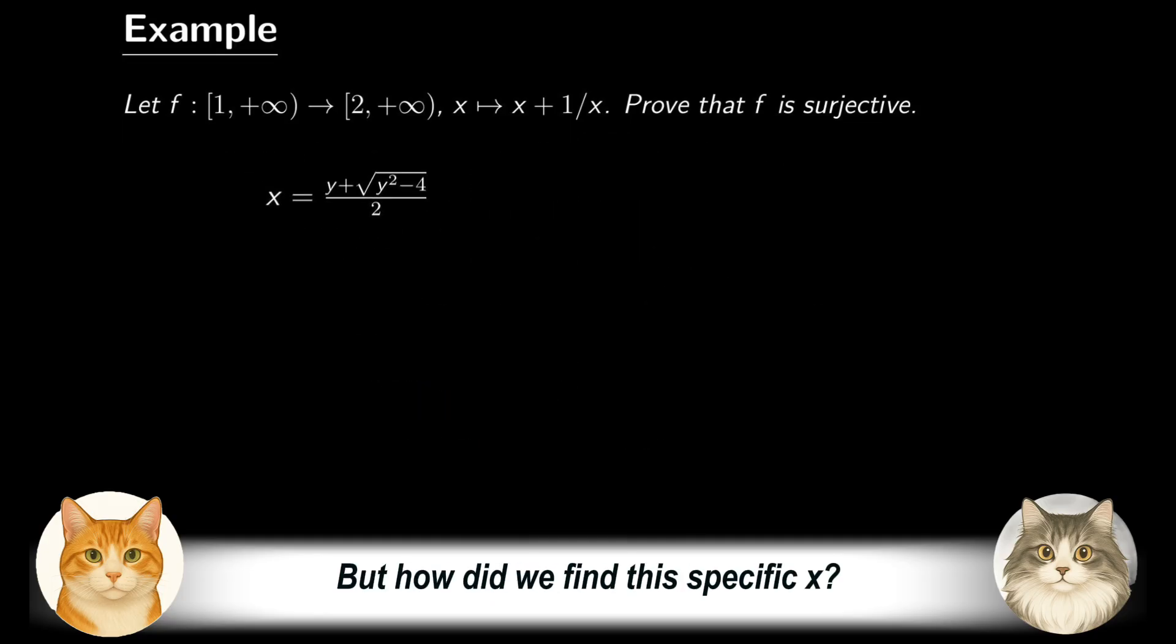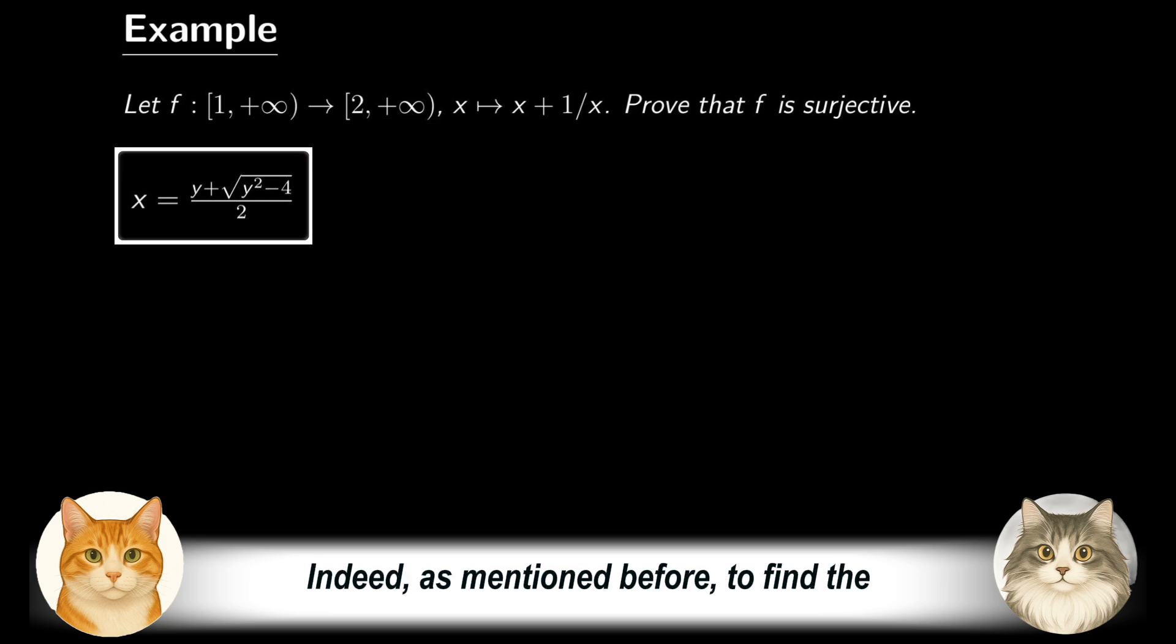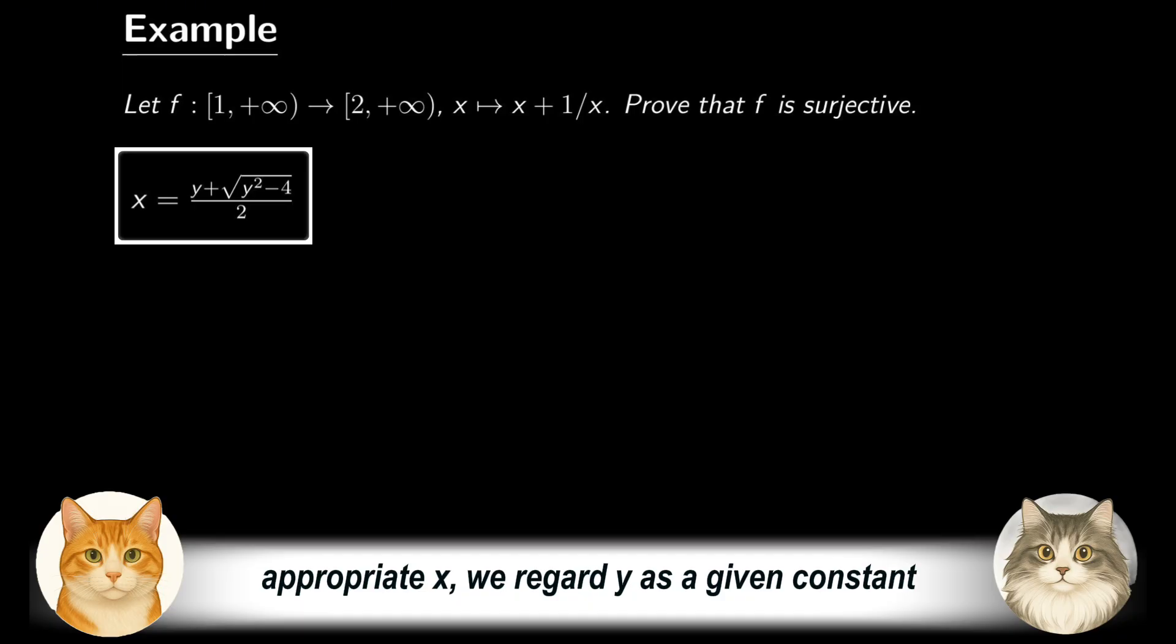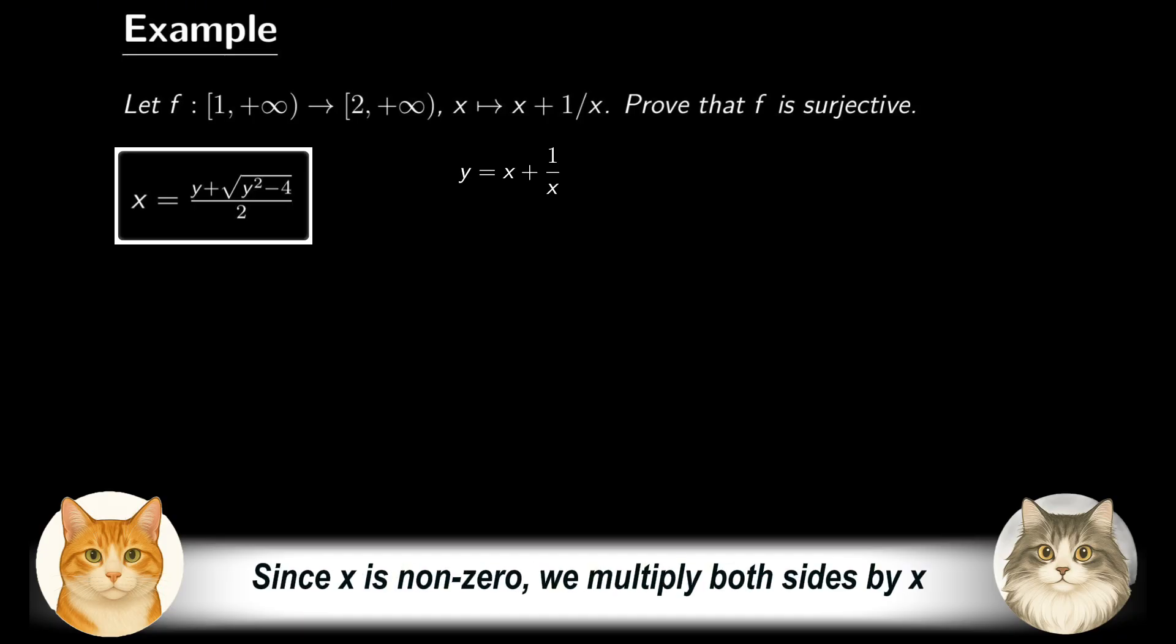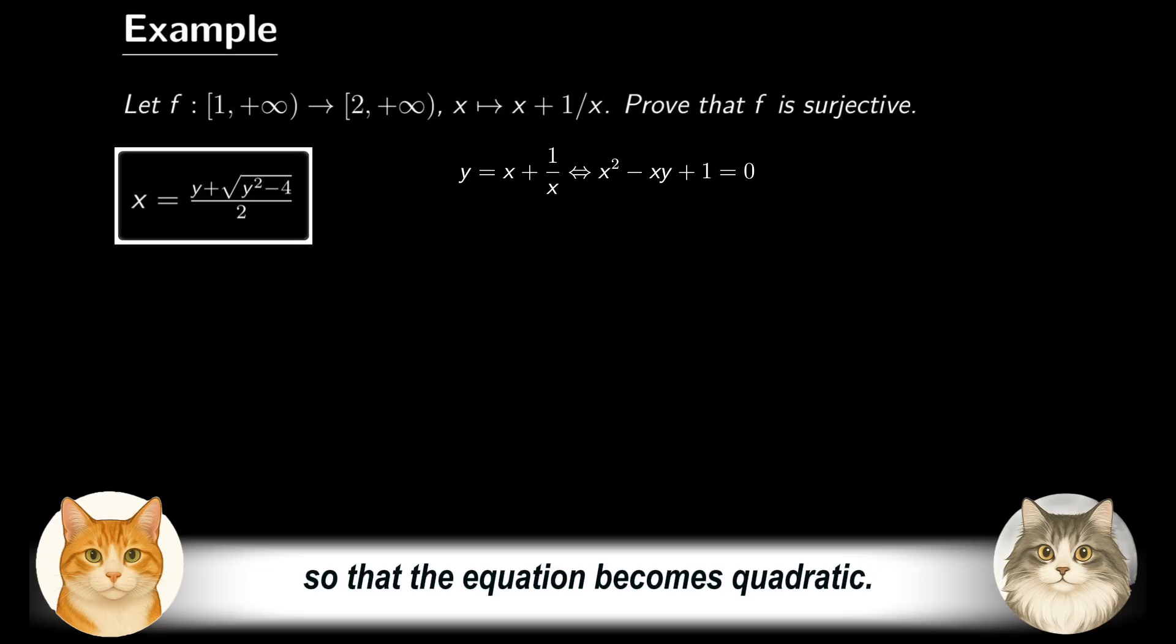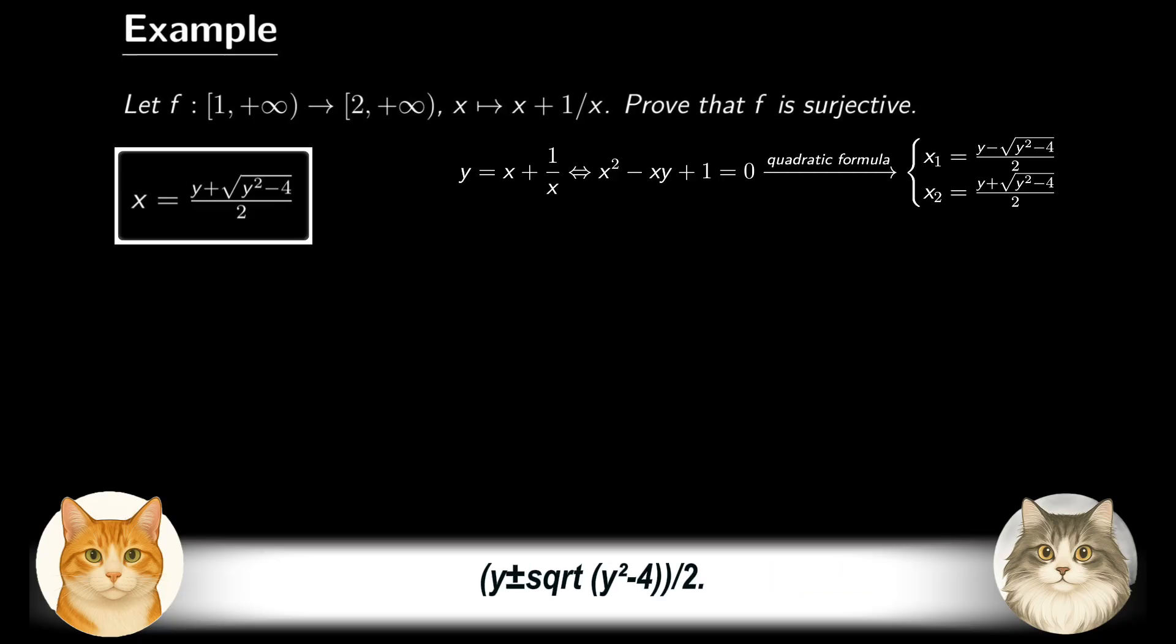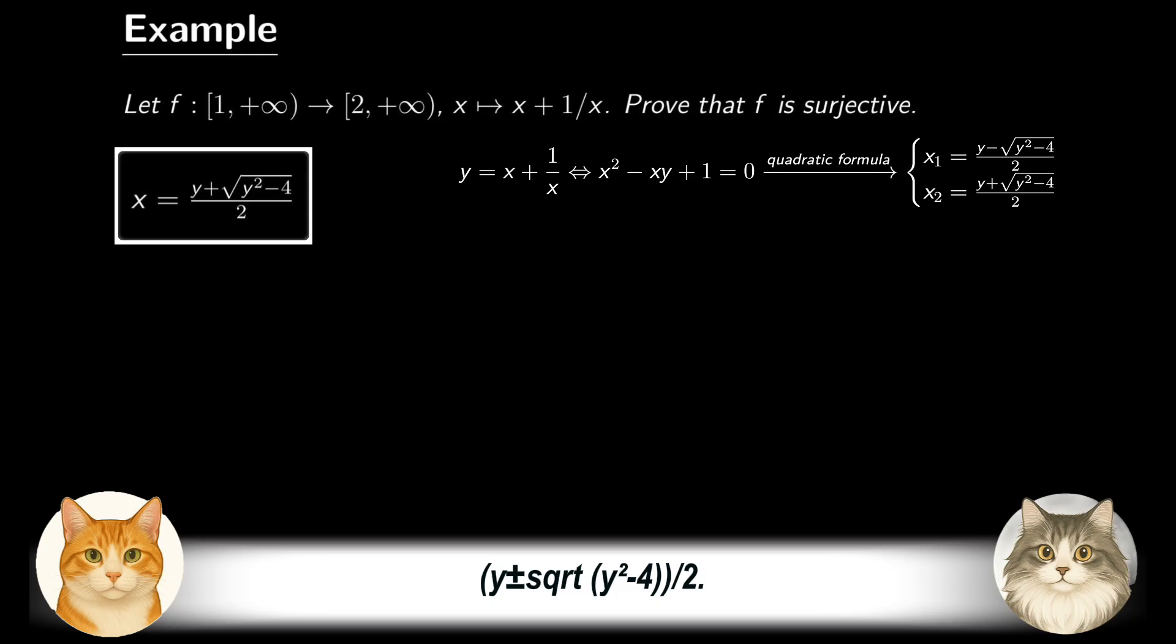But how did we find this specific x? Indeed, as mentioned before, to find the appropriate x, we regard y as a given constant and solve the equation f(x) equals y. Since x is non-zero, we multiply both sides by x, so that the equation becomes quadratic. The quadratic formula then provides two real roots, (y ± √(y² - 4))/2.